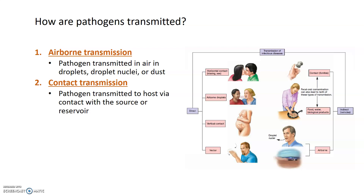Pathogens need to go from their reservoir or natural habitat to infect hosts, and there are several ways they do this. Pathogens can be transmitted through the air in droplets or droplet nuclei. Air is not a great medium for pathogen growth, so they travel in water droplets or respiratory droplets from an infected host. Droplets can't travel as far as droplet nuclei because they are larger, while dust can travel very far. All of these allow pathogens to be transmitted through the air.